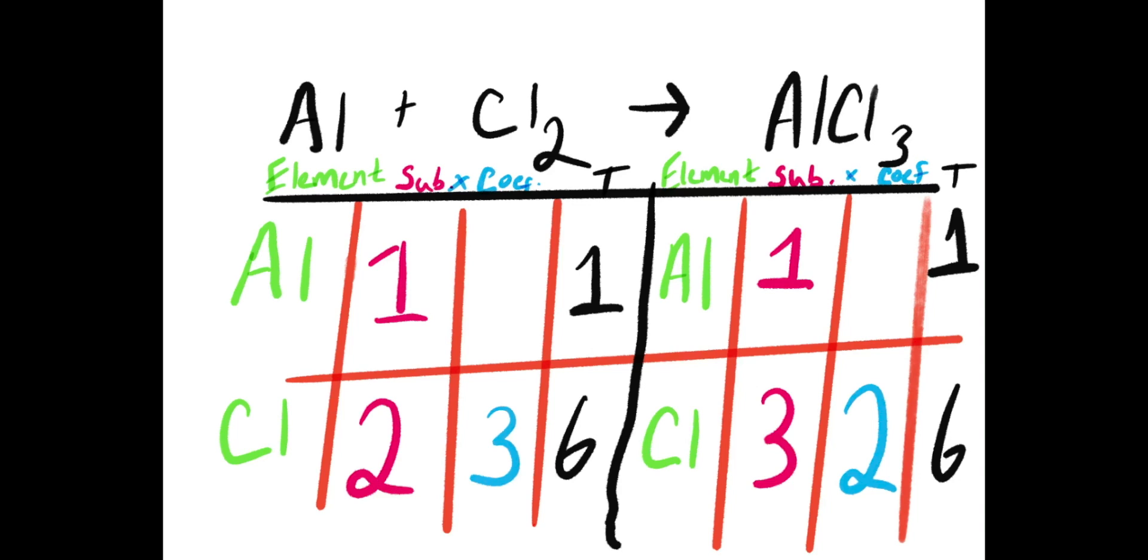This is all good, but the issue arises when I add my 2 to the coefficient of my aluminum chloride. The coefficient not only affects the chlorine, but also affects the aluminum on that side. Now, I can see that I have a total of 2 aluminums on my product side and one on my reactant side.